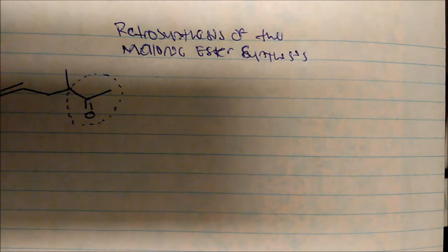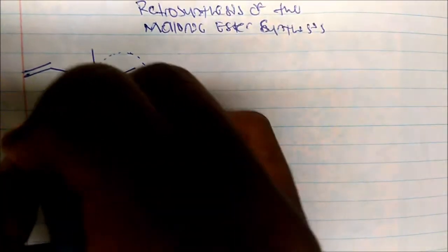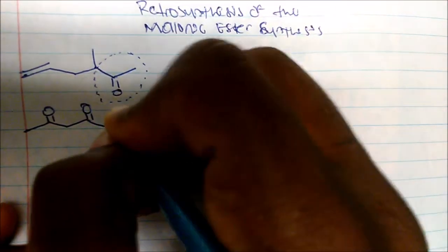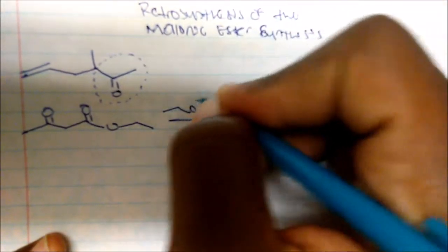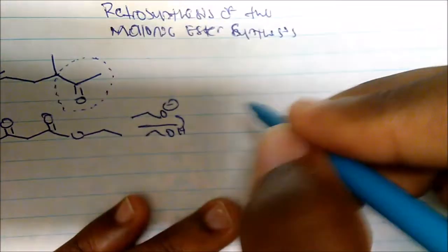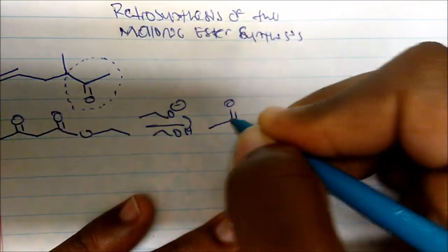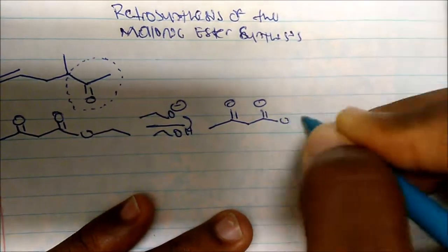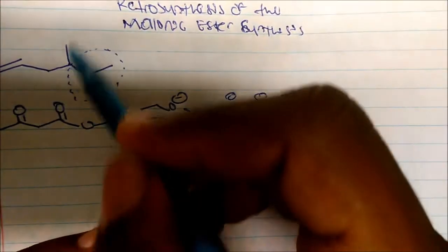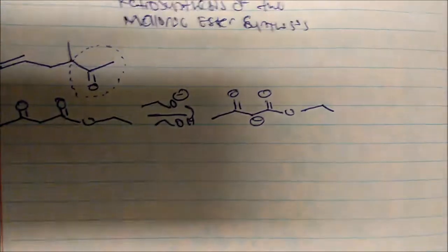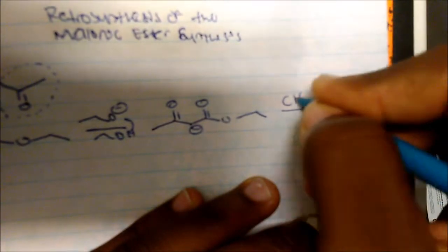Now let's go through the synthesis. If we take ethyl acetoacetate and add a non-nucleophilic base, we deprotonate on our alpha carbon to get a negative charge there. I see a CH3 group as one of the additions, so I could add methyl iodide.